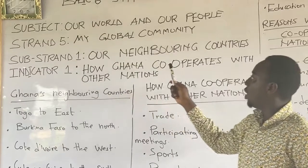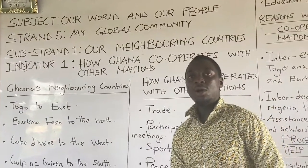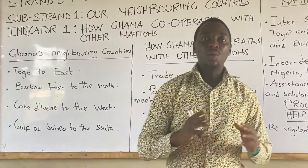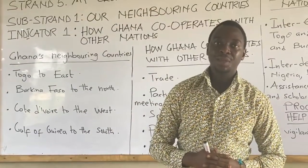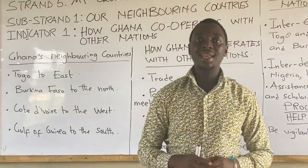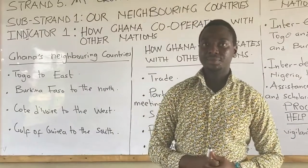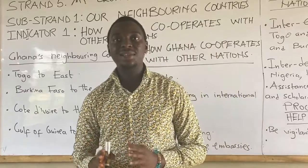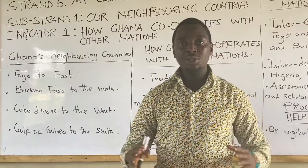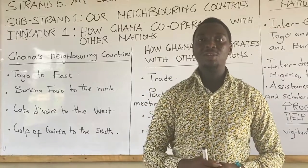We know Ghana is an African country, located at the western part of Africa. Ghana has 92,099 square miles around its borders, with over 30 million residents. Ghana also has some close neighbors. Let's look at some of the close neighbors of Ghana.